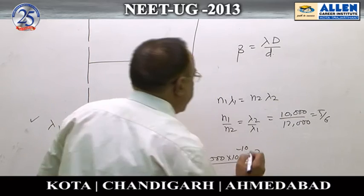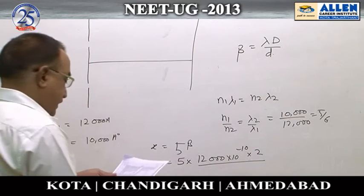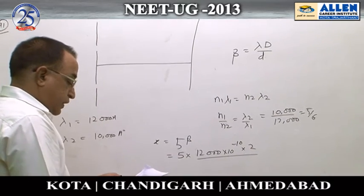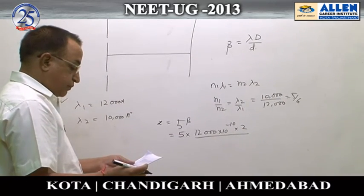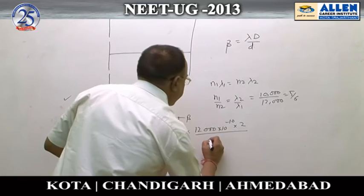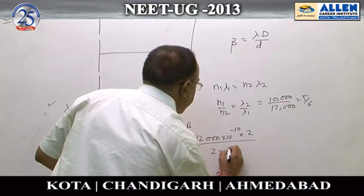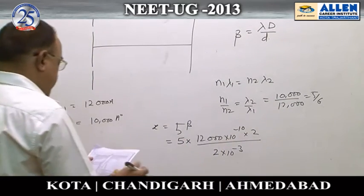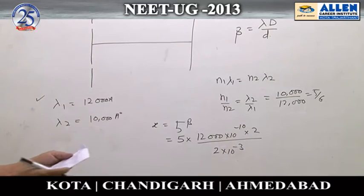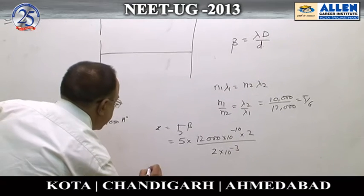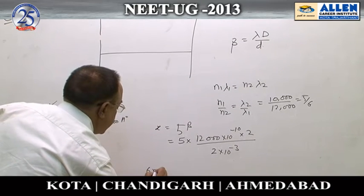5λd, with D given as 2 meters and small d given in the problem as 2 millimeters. So the answer for this problem will be 6 millimeters. Option number 3 is the correct answer.